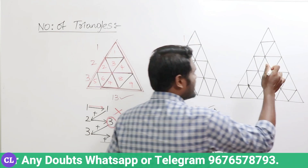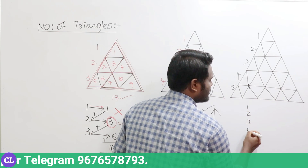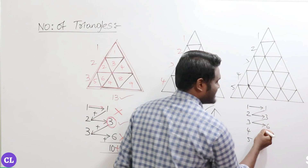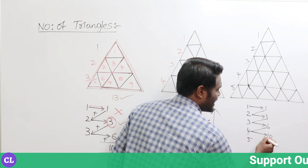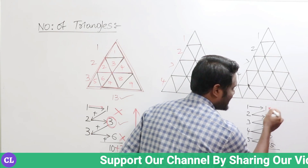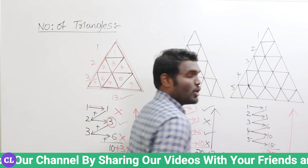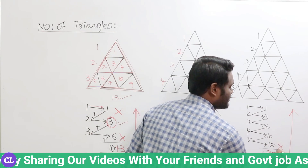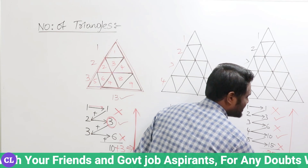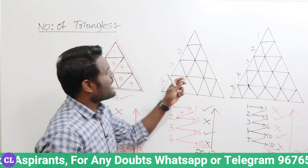Now five divisions. Write one, two, three, four, five. For one write one; one plus two equals three; three plus three equals six; six plus four equals ten; ten plus five equals fifteen. Add all: one plus three plus six plus ten plus fifteen equals thirty-five. Now from the bottom take alternate places — leave the first, write the second, leave the third, write the fourth, leave the fifth. Alternating numbers are ten and three; ten plus three equals thirteen. So thirty-five plus thirteen equals forty-eight triangles.